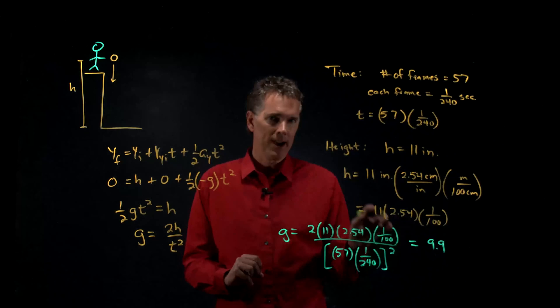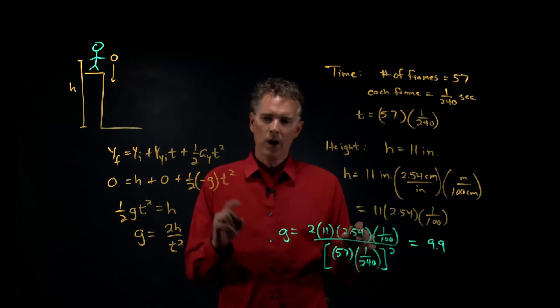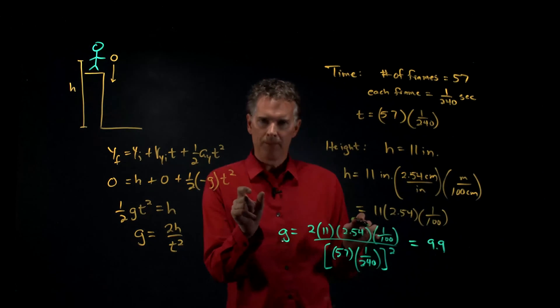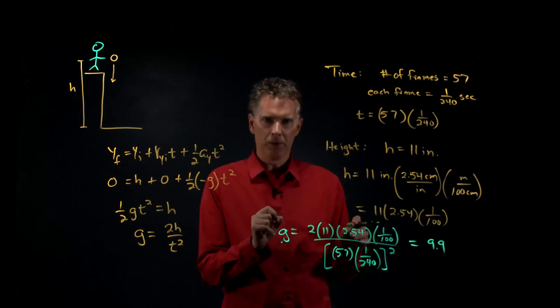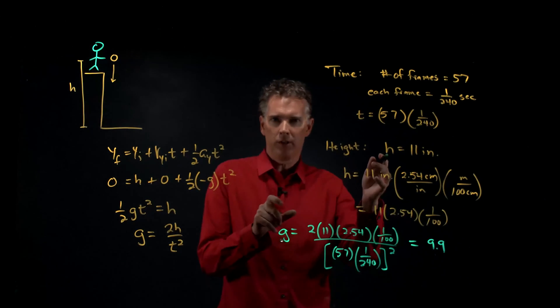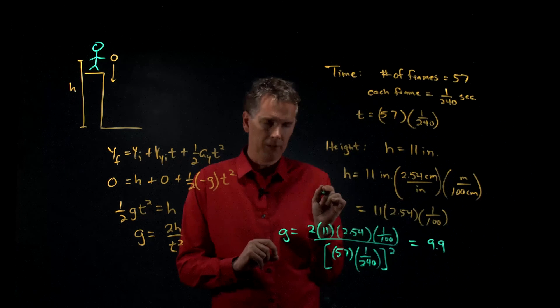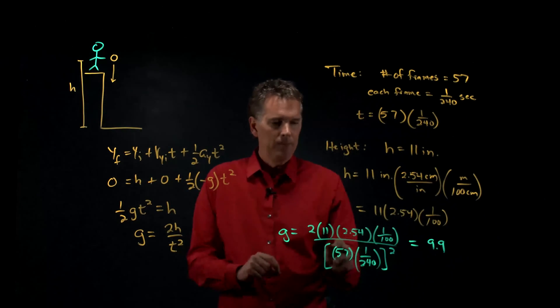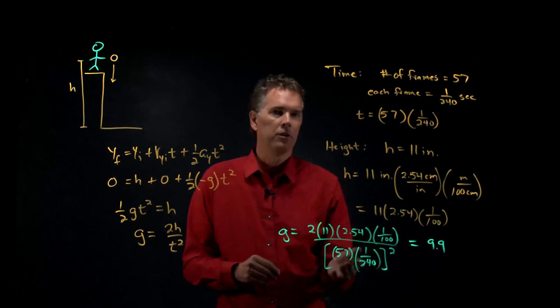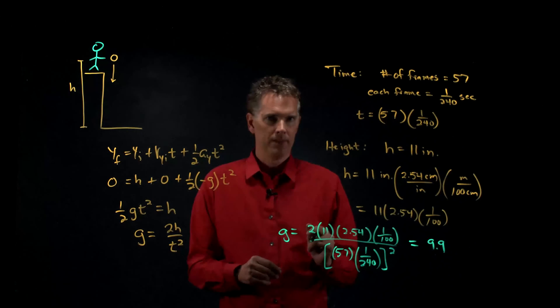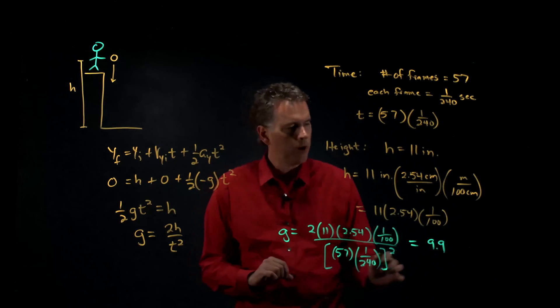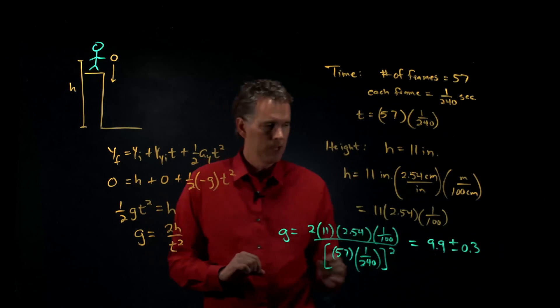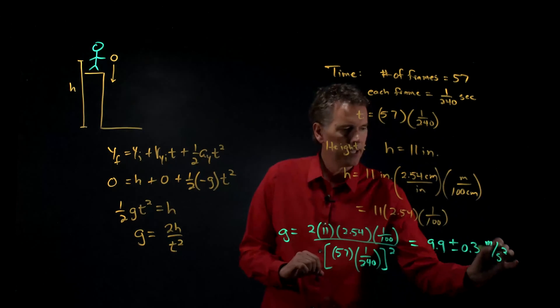You can also calculate your error bars. How do you do it? Well, as you step through that video, you notice that it's hard to tell one frame from the next. And if you do this experiment multiple times, sometimes you'll get 56, sometimes you'll get 57, sometimes you'll get 58 frames. If I think about moving this number from 57 to 58, what do I calculate for g? If I go to 56, what do I calculate for g? Those are your error bars. And if you do it, you can double check. It's about an extra .3. So this should be your final answer. 9.9 plus minus .3 meters per second squared, which is really close to the actual value of g.